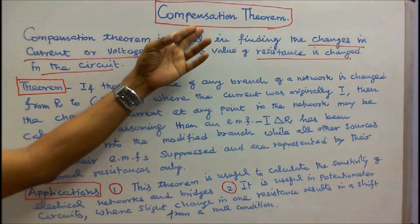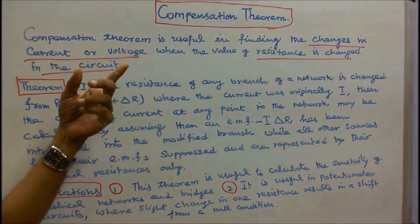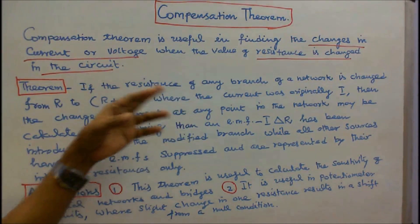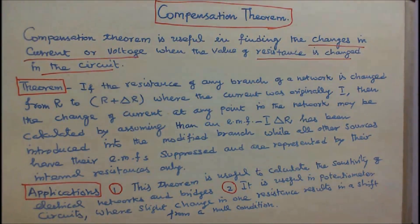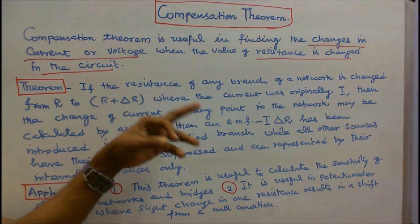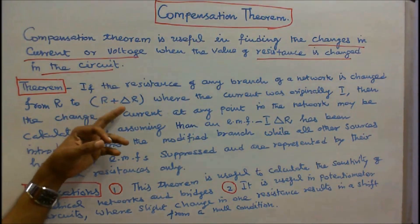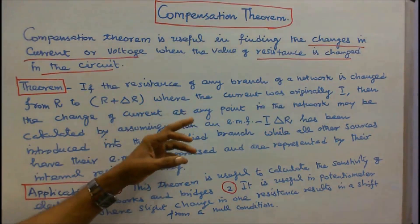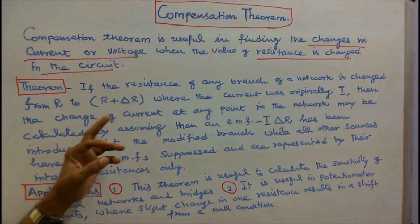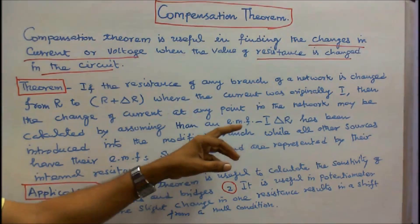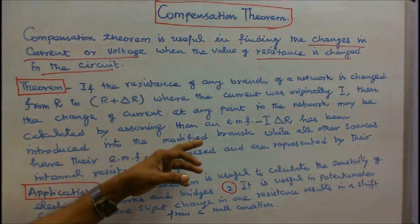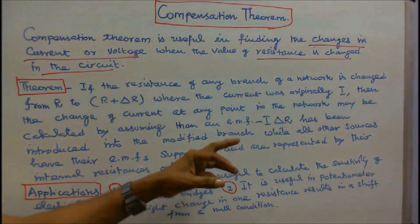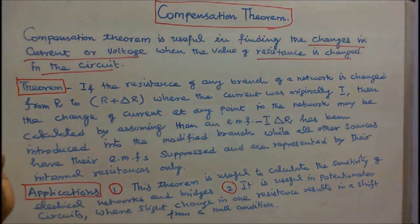This class we discuss about the compensation theorem. Compensation theorem is useful in finding the changes in current or voltage when the value of resistance is changed in the circuit. This theorem states that if the resistance of any branch of a network is changed from R to R plus delta R, where the current was originally I, then the change of current at any point in the network may be calculated by assuming that an EMF of I times delta R has been introduced into the modified branch, while all other sources have their EMFs suppressed and are represented by their internal resistances only.